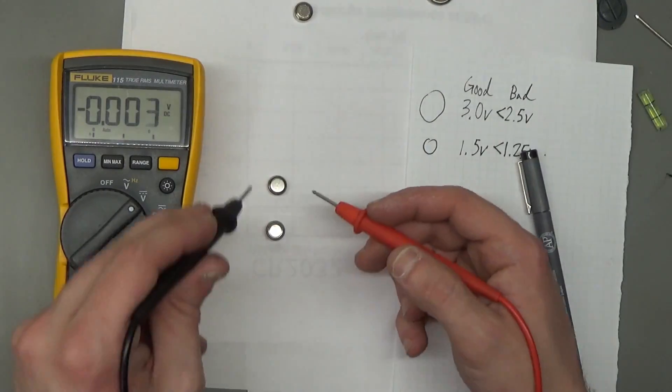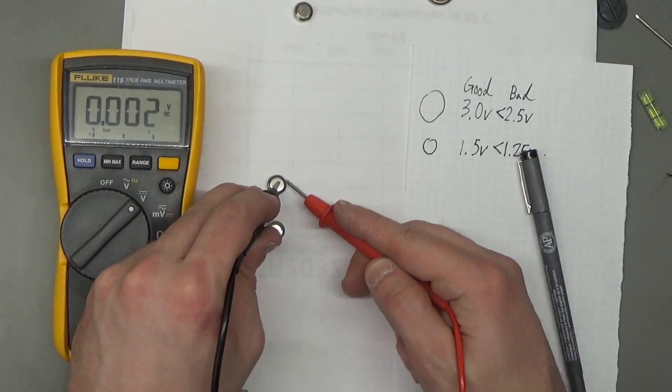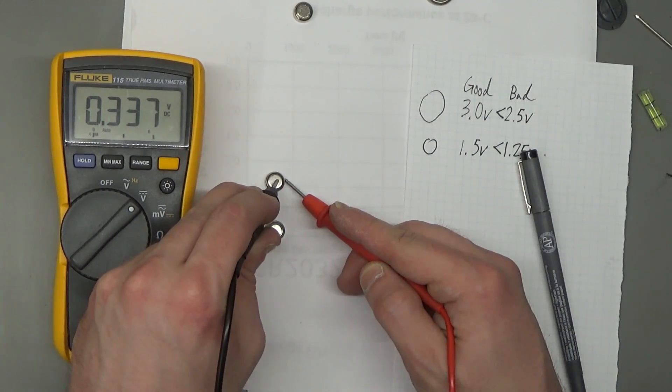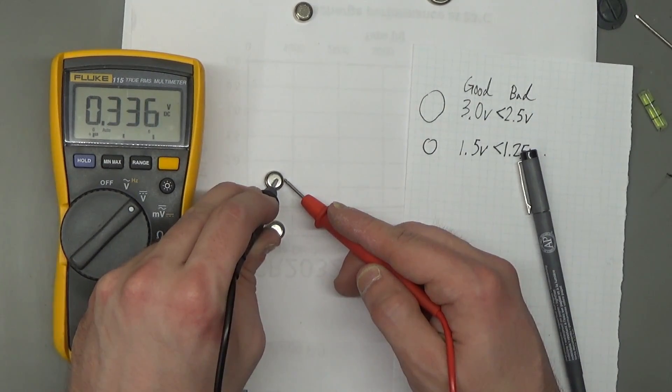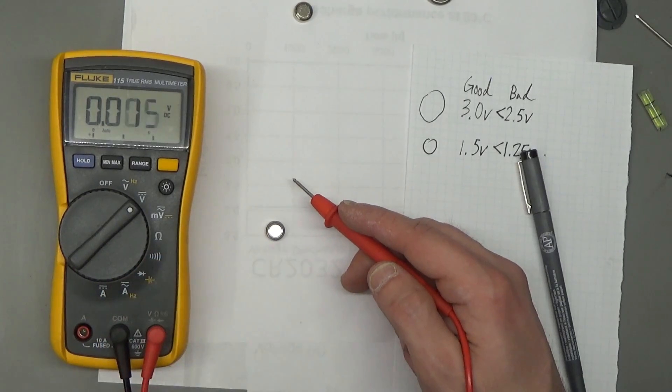And then the next one: black lead in the center, red lead on the side. Wow, 0.3 volts. That's definitely a dead battery, so I'm going to move that one down to the bottom here.